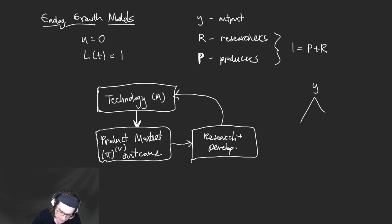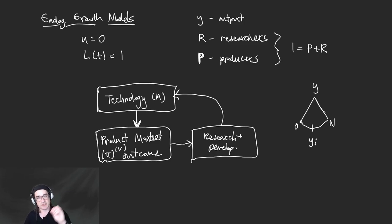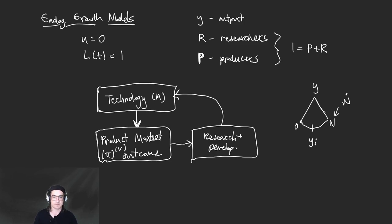In terms of product markets, that Y is going to be produced from a continuum from zero to N, where N is the total number of intermediate goods - specific product lines produced by individual firms. They all get aggregated together - that's the goods aggregator. Research generates N-dot, the generation of new products. R maps into N-dot - that's our production function for ideas. You hire researchers, hopefully they come up with new products.